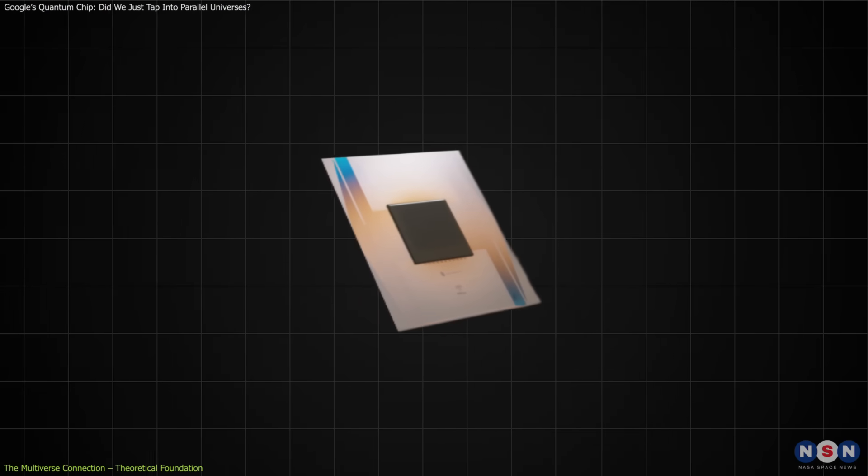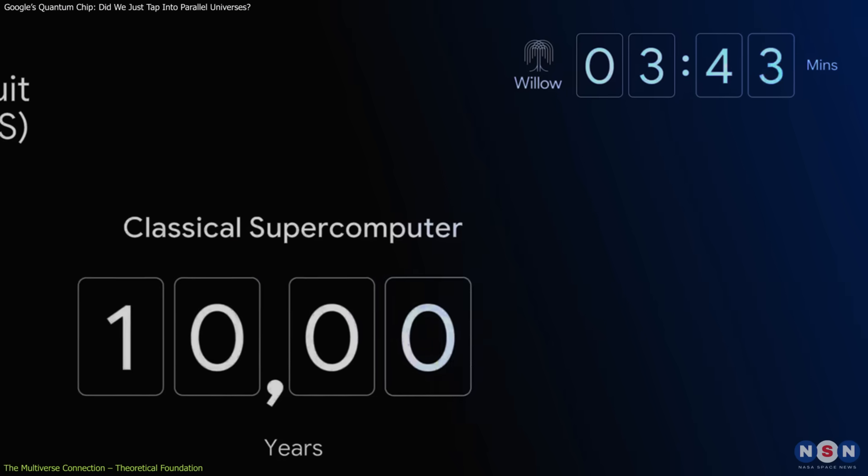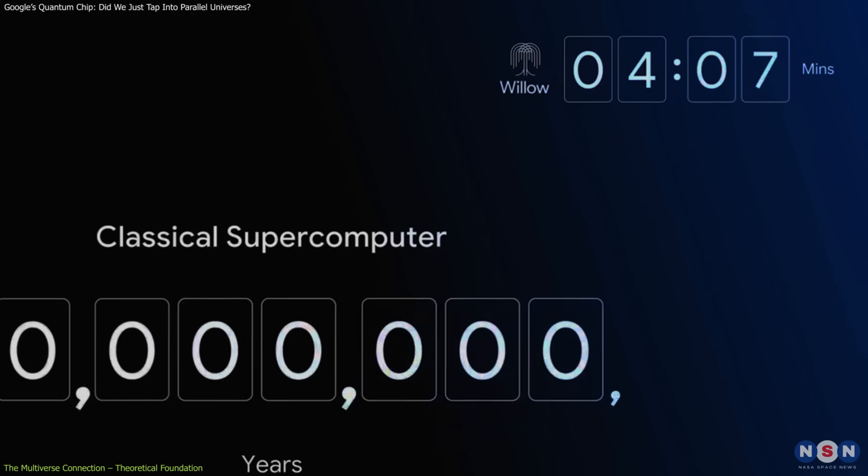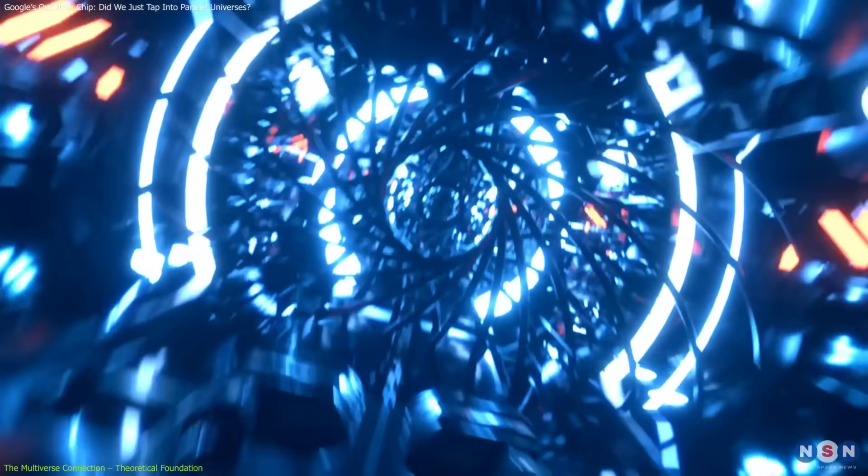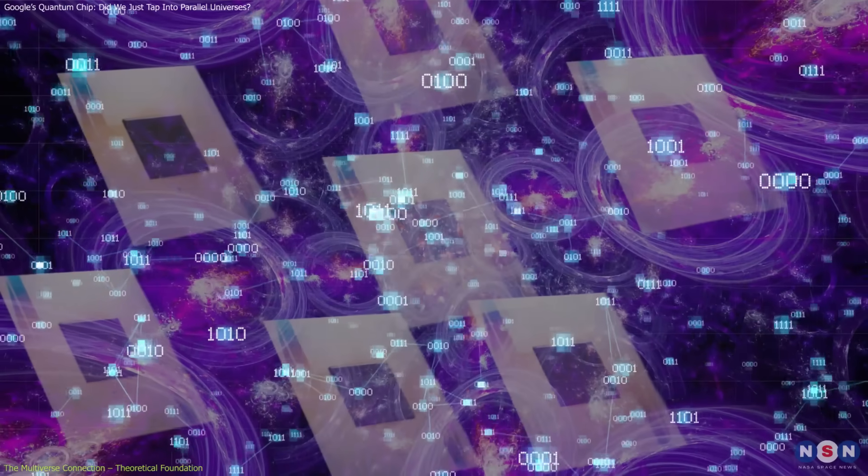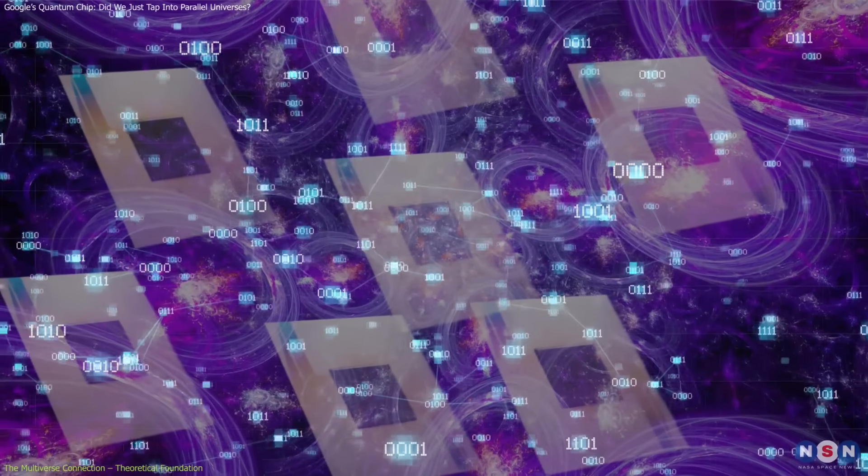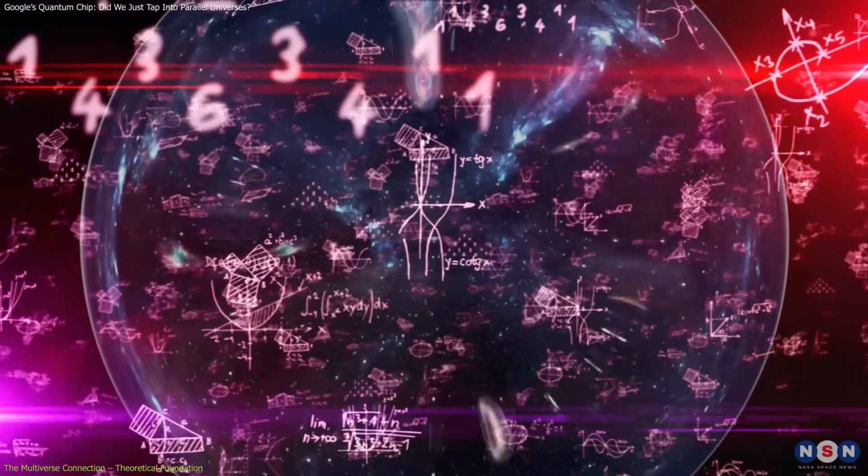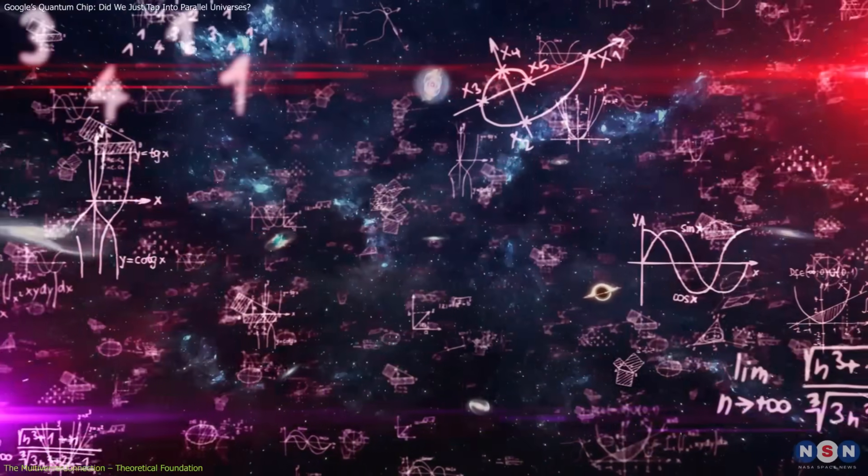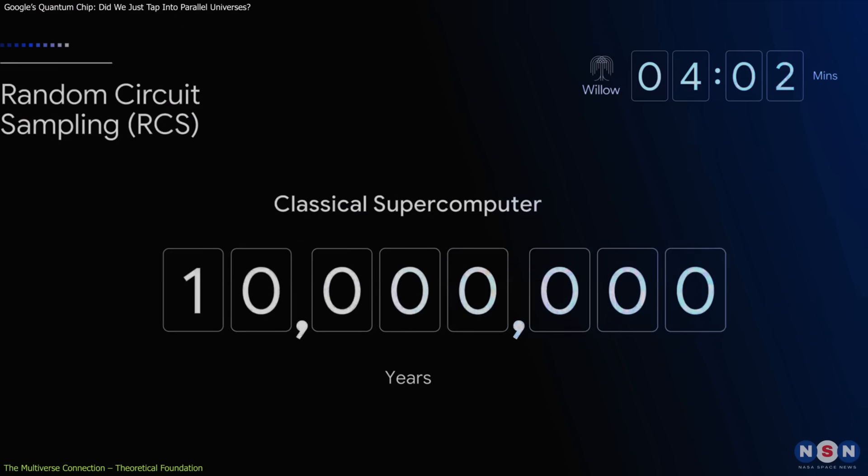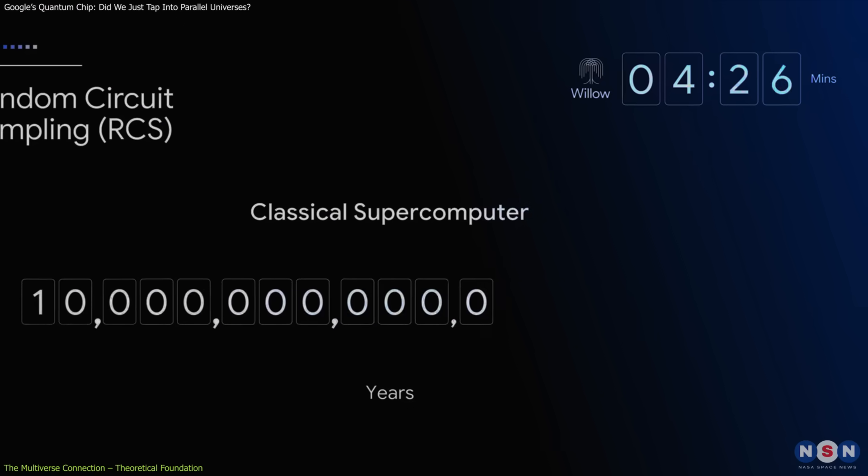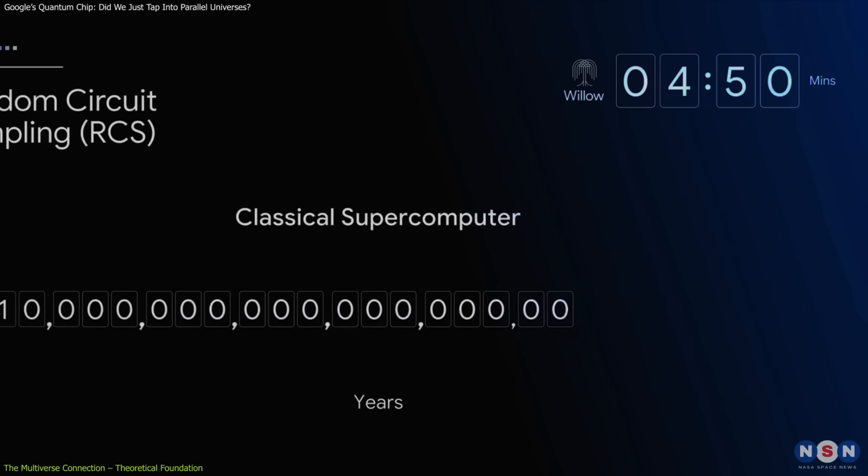And this is where Willow comes in. Its ability to solve a problem so complex, so quickly, makes some scientists wonder if it really is tapping into parallel worlds. Imagine billions of versions of Willow working together across infinite universes, with the final answer popping up in our reality. Sounds insane? Maybe. But it's one way to explain quantum computing's almost magical speed. Of course, not everyone agrees.